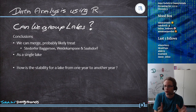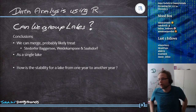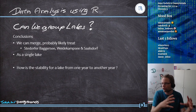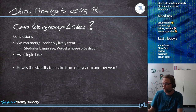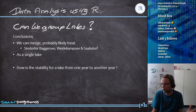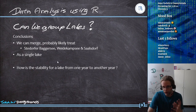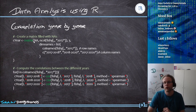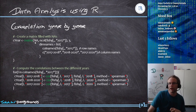The conclusion is that we can likely treat Seydorfer Bachersee, Weide Comsee, and Salzdorf as a single lake. But we also need to ask: how stable is a lake from one year to another? If there are massive differences from year to year, it becomes very hard to say anything about stability over time. We can analyze this relatively easily using a new two-dimensional matrix filled with NAs.